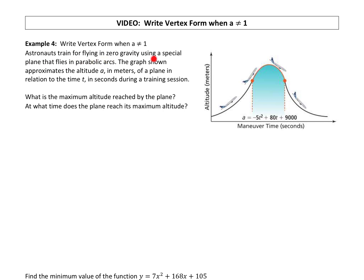Astronauts train for flying in zero gravity using a special plane that flies in parabolic arcs. The graph shown approximates the altitude a in meters of a plane in relation to the time t in seconds during a training session. So you can see the plane goes up, kind of parabola, comes back down.